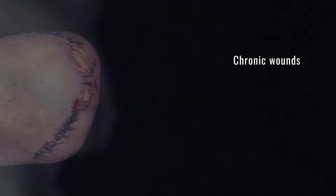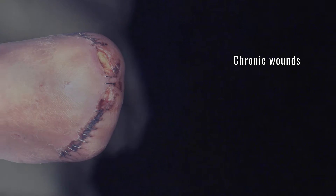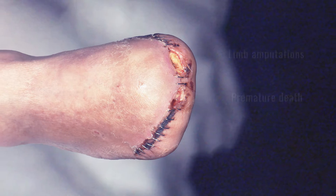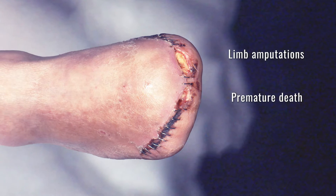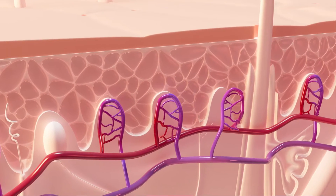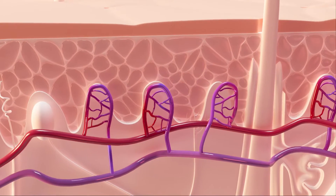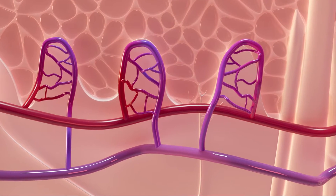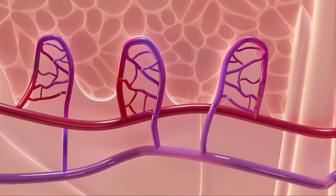Chronic wounds are a health problem, with significant reductions in quality of life for those affected, and sadly, can have devastating consequences such as limb amputations and premature death. Tissue is dependent on the vasculature for the transport of oxygen and other essential nutrients. Disturbances in vascular supply will have profound effects on local tissue viability and repair.